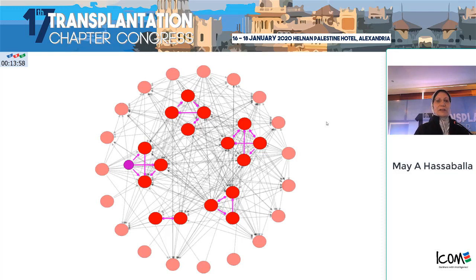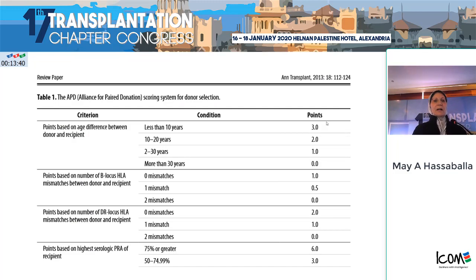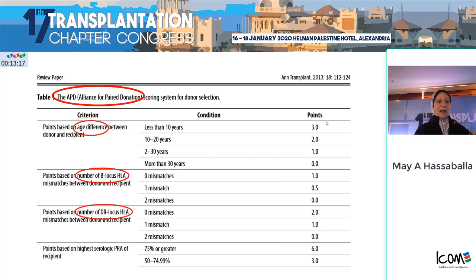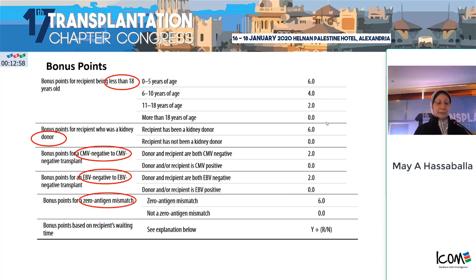This requires sophisticated algorithms and software platforms. One example is the Alliance of Paired Donations, which first matches for ABO incompatibility, then proceeds to virtual crossmatch after excluding unacceptable HLA antigens. Points are given for age difference, number of D-locus HLA mismatches, and DR-locus HLA mismatches. Points are also given for high panel-reactive antibody of the recipient, with bonus points for those younger than 18 years, those who were donors themselves, CMV-negative to CMV-negative, Epstein-Barr virus-negative to EBV-negative, zero antigen mismatches, and recipient wait time.